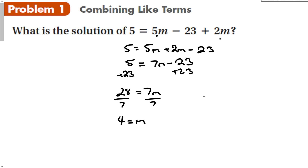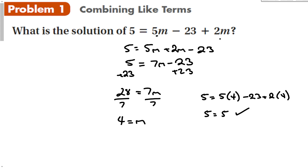If I wanted to, I could always plug in the 4 for m and see does this actually work. Then 20 minus 23 plus 8 is 5, so this does work. I don't have to check it every time, but it's nice to know that I'm doing things the right way.